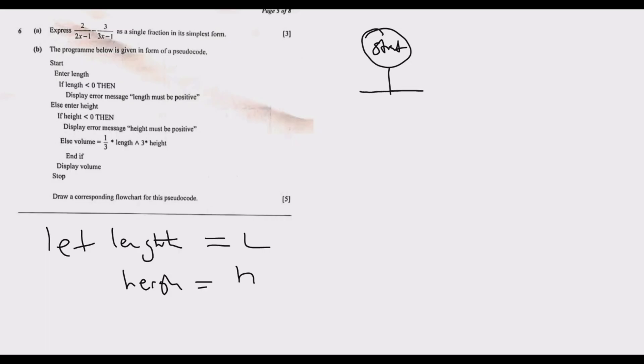After you start, you need to enter the value. What are we entering? The first value is length, which is L. Then after I enter the value L, we need to check to test the value of L. The first question is: is L less than zero? There are two possible answers, so it's a decision box. If it is yes, we need to print an error.